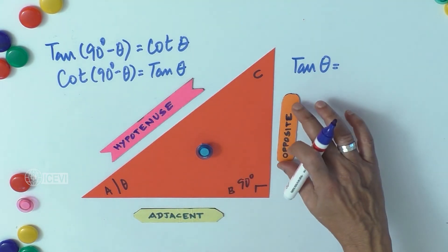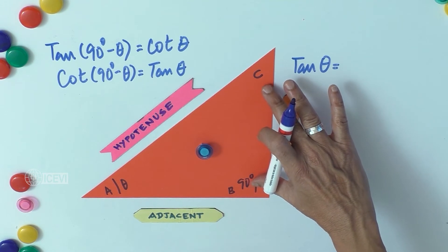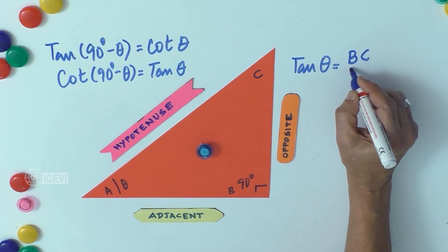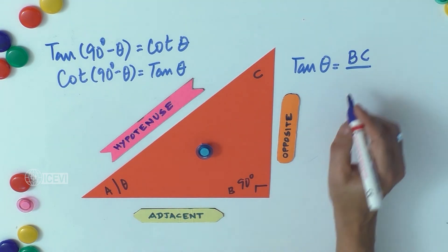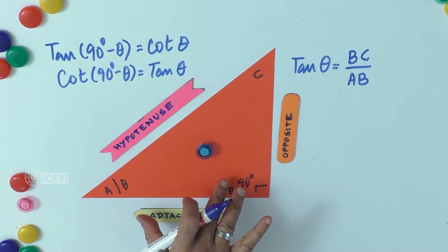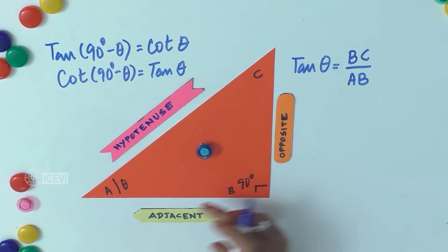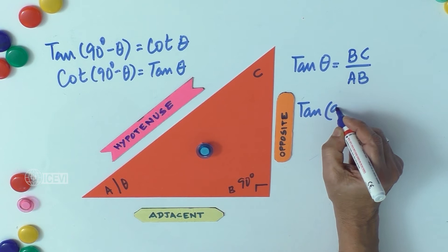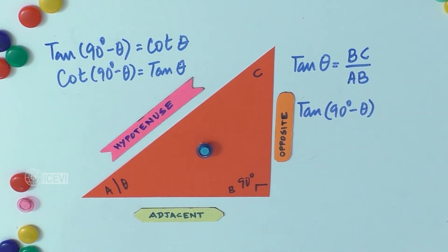We already know that tan θ is opposite by adjacent. The opposite side is BC and the adjacent is AB. We do not know the actual measurements of AC and AB, so we take the sides as a reference. Now let us find out tan(90° − θ).